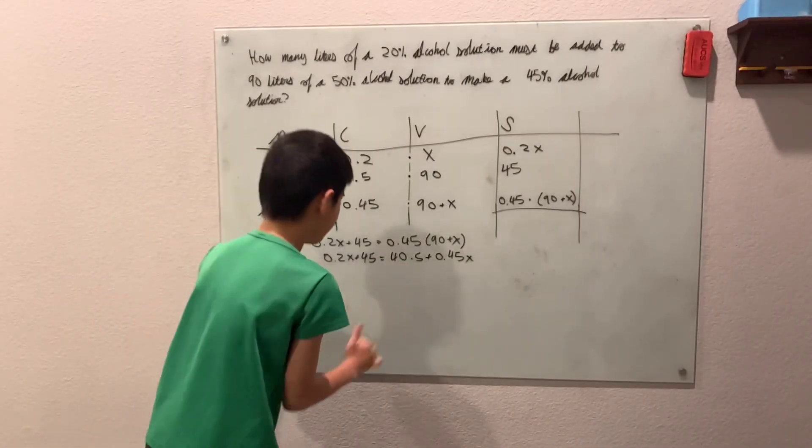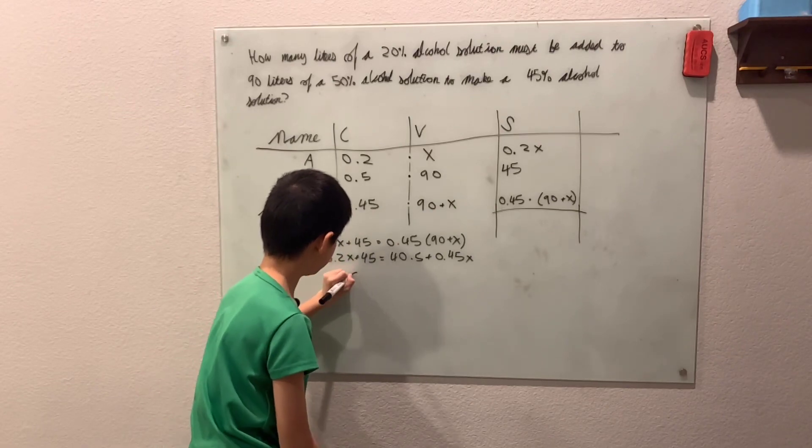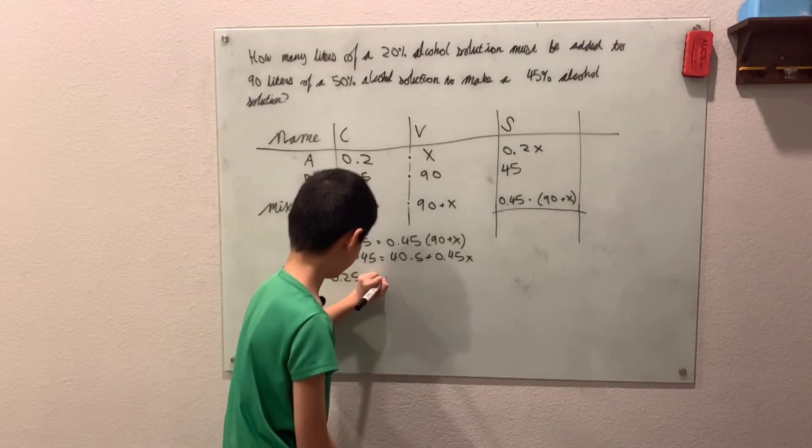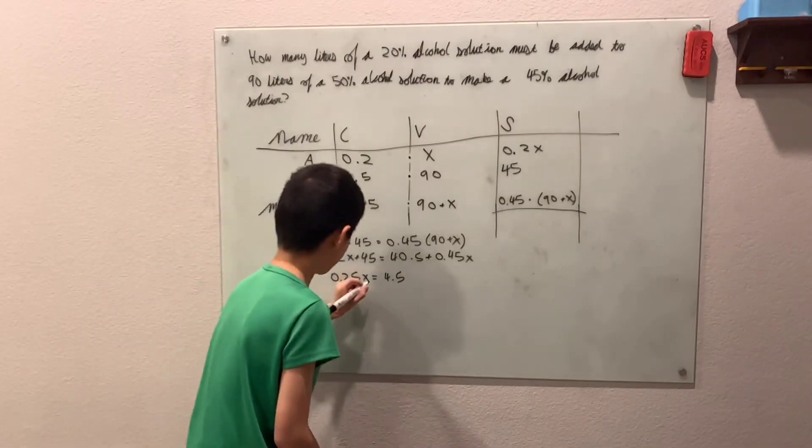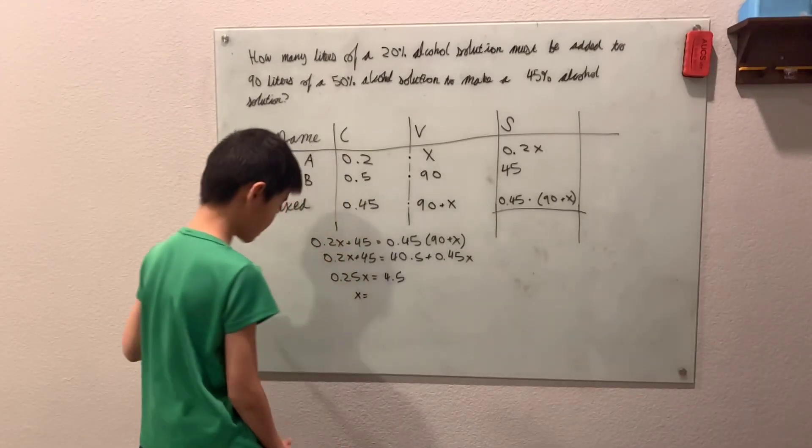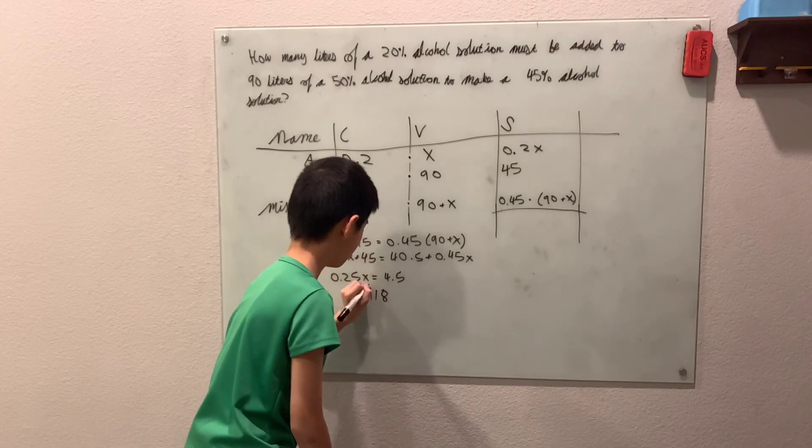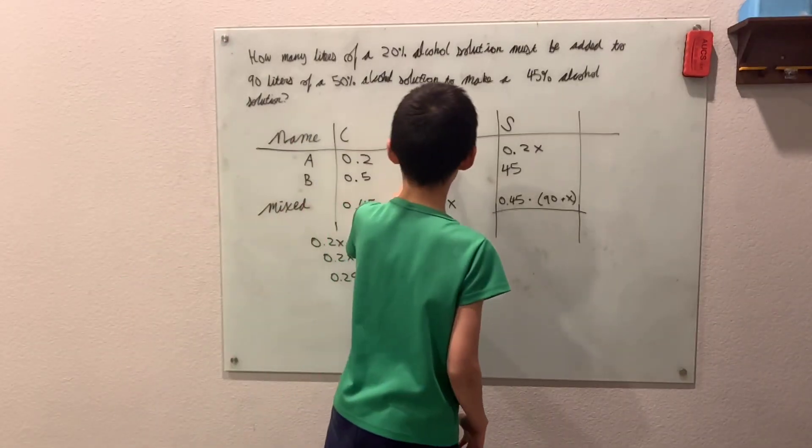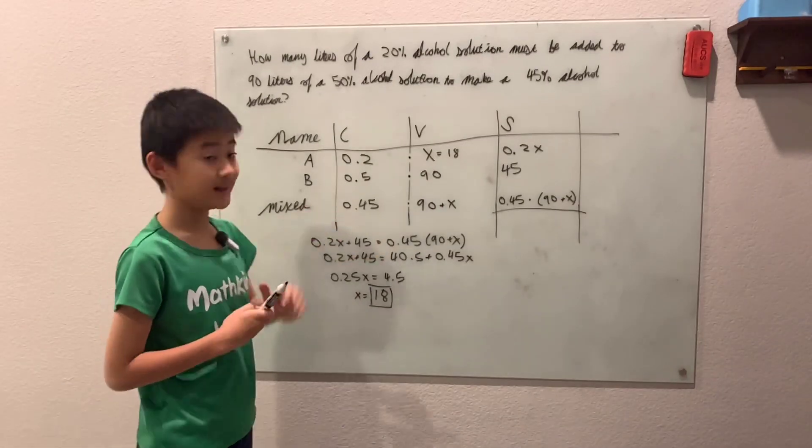And let's see, moving all the variables to one side and moving all the numbers to one side, we have 0.25X equals 4.5. And then multiplying by 4 on both sides, we have X equals 4.5 times 4, 16 plus 2, 18 liters. And we can be sure that this is what we want because V volume is 18.